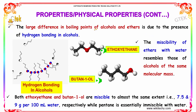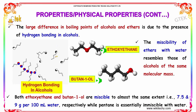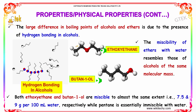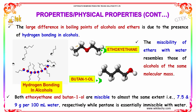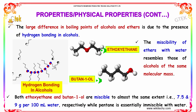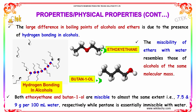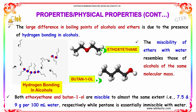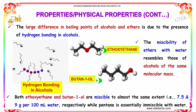The miscibility of ethers with water resembles that of alcohols of the same molecular mass. Both ethoxymethane and butan-1-ol are miscible to almost the same extent — 7.5 and 9 grams per 100 ml of water respectively — while pentane is essentially immiscible with water.